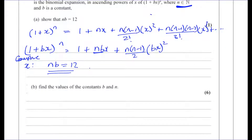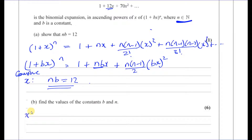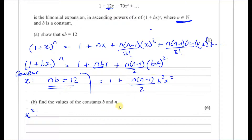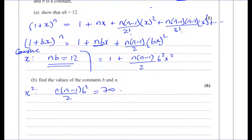Part b: find the values of the constants b and n. Comparing the x squared terms, we have n(n−1) over 2 times b squared x squared. The expansion gives 70x squared, so comparing x squared coefficients: n(n−1) over 2 times b squared equals 70. So we now have two equations: nb equals 12, and n(n−1)b squared over 2 equals 70.